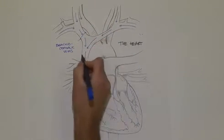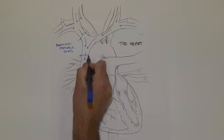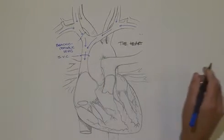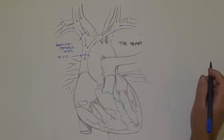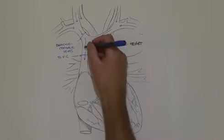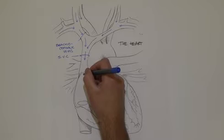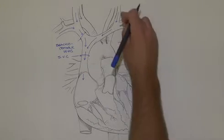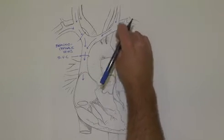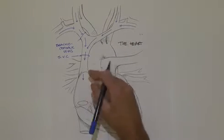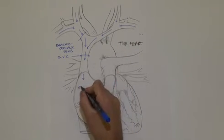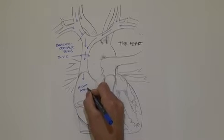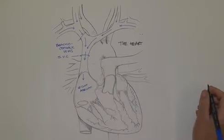When the two brachiocephalic veins come together, that forms the superior vena cava. The superior vena cava begins at about the first rib level on the right-hand side, then comes down and drains into the right atrium. This is bringing blood back from the head and upper limbs, all coming into the right atrium.